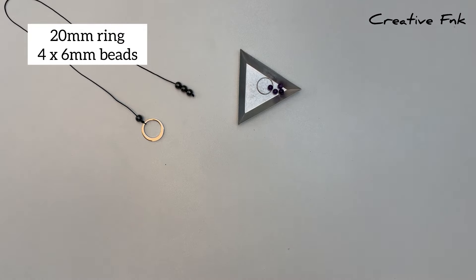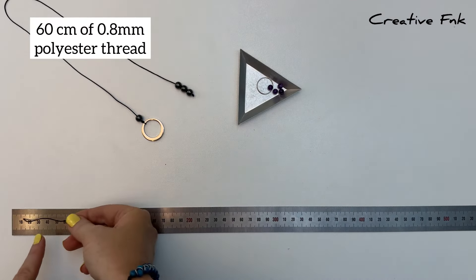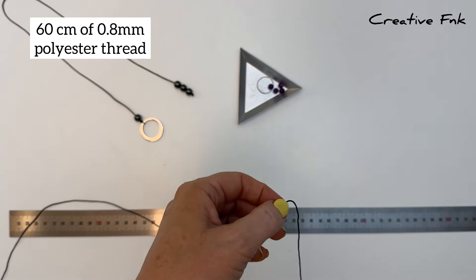For my design today I'm using a 20 millimeter sterling silver ring and I've got four 6 millimeter gemstone beads. For the cording we're using 60 centimeters of 0.8 millimeter polyester cord.